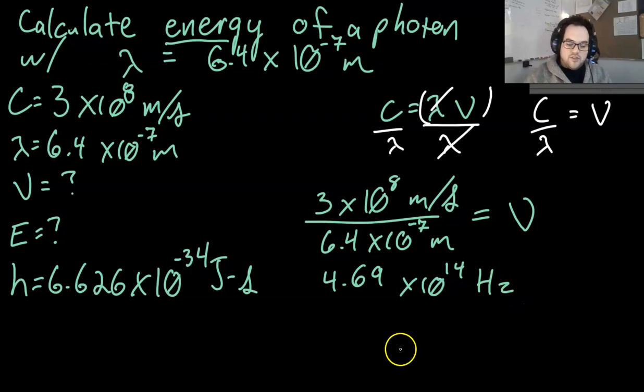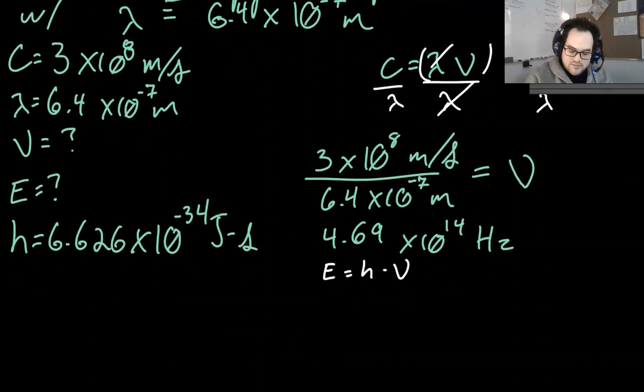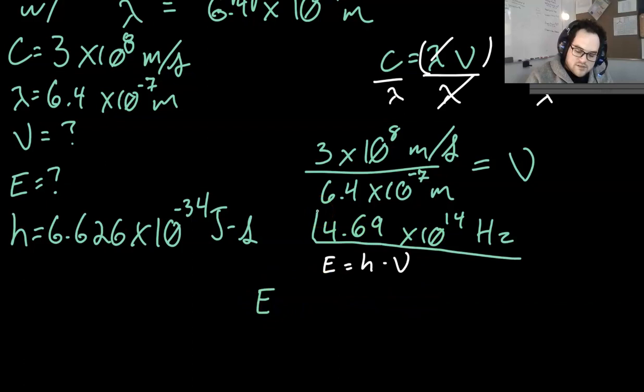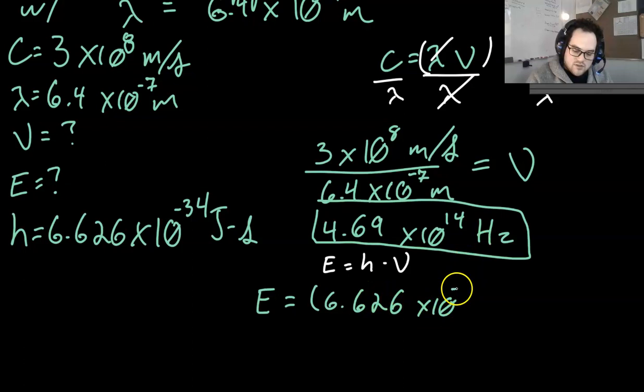So now we plug this in to our energy equation which if you recall is E equals Planck's times nu. I'm going to scooch down just a tiny bit. E equals 6.626 times 10 to the negative 34 joule seconds times